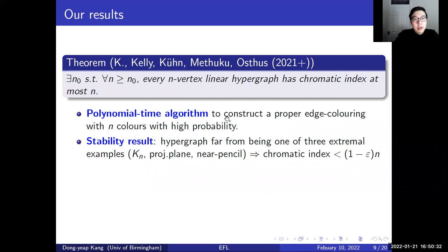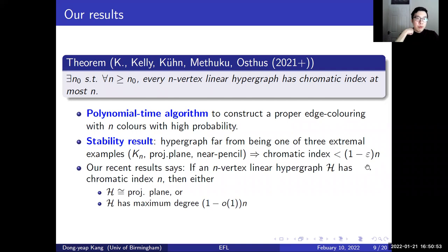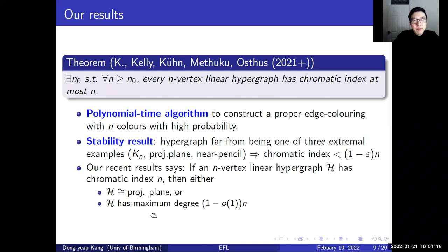We also proved a stability result: if our n-vertex hypergraph is far from being one of the three extremal examples I mentioned, the chromatic index should be strictly less than n. And one of our recent results gave a characterization of an n-vertex linear hypergraph with chromatic index exactly n — either the hypergraph is isomorphic to a projective plane, or it contains a vertex of degree very close to n.